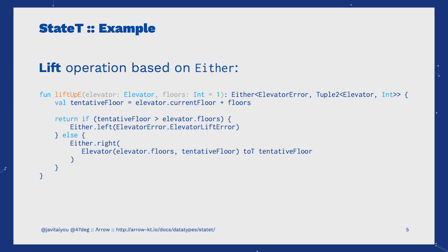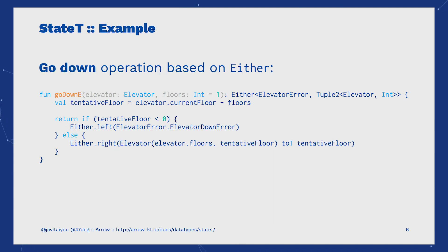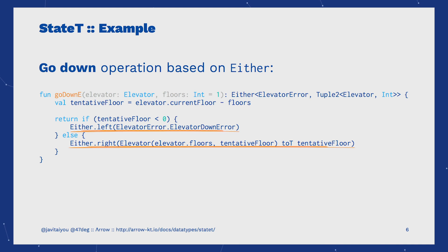For instance, in order to lift up our elevator we simply check its current floor and see if lifting it up will make it go beyond its limits. In that case, we return a Left value containing the corresponding error. Otherwise, we return a Right value with a tuple containing an updated instance of the elevator and the result of the lift up operation. We follow the same pattern to make our elevator go down. We check if the future position of our elevator, after applying the operation, will exceed its lower limits. If that's the case, we return an error. Otherwise, we return an updated instance of the elevator and the result of the operation.